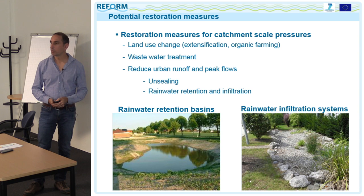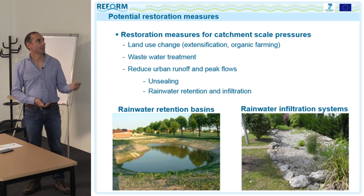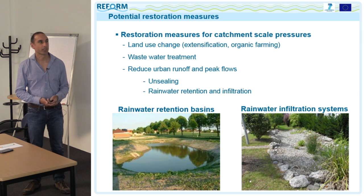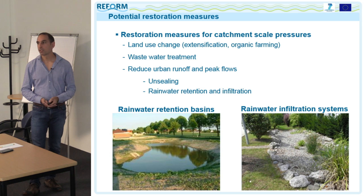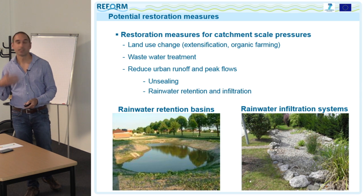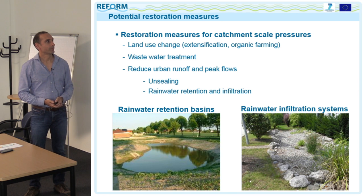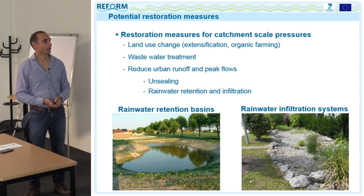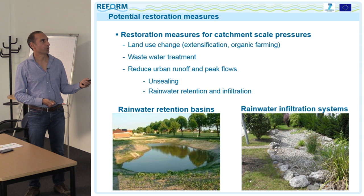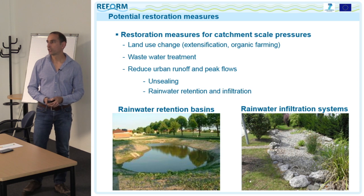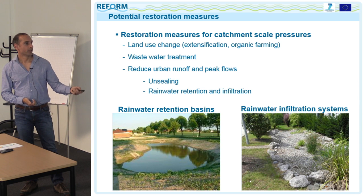Starting with the catchment scale: we can change land use. There is strong lobbying from farmers, so this is difficult, but studies show that a larger share of organic farming in a catchment leads to less pesticide input and lower nutrient concentrations. Wastewater treatment is a very classical catchment-scale measure. Restoring a more natural flow regime by reducing urban runoff has also been widely applied, for example by developing rainwater retention basins in urban areas.